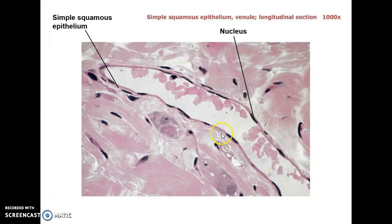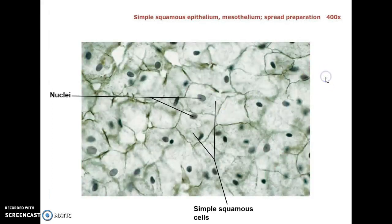Some of them have that nice darkly stained nucleus right down the middle. This is now another slide — an unusual preparation. It's a peel where they've just taken the tissue and laid it flat on the slide. It is labeled as mesothelium.